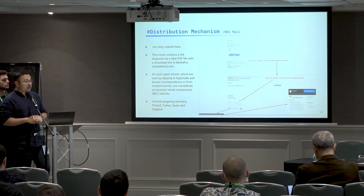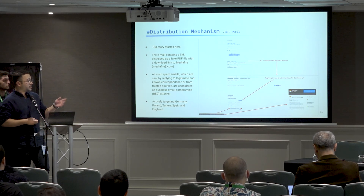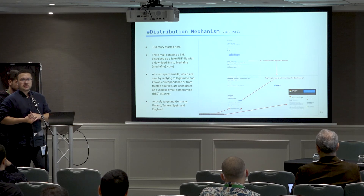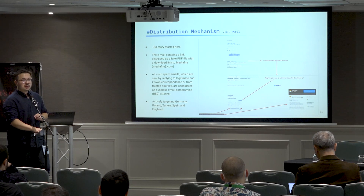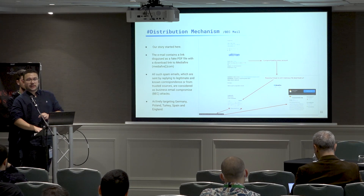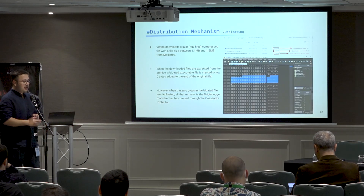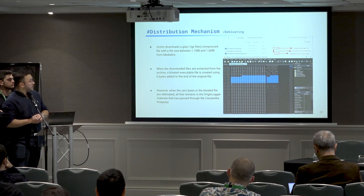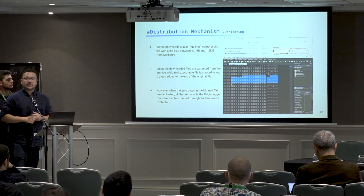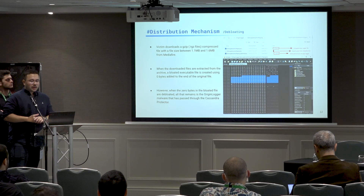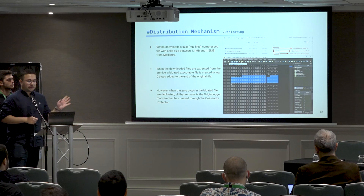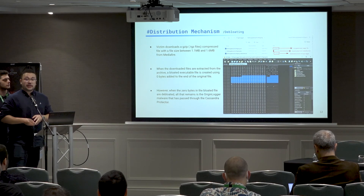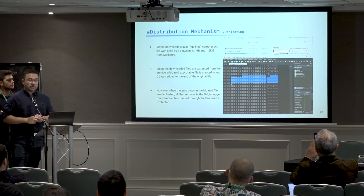When looking at the campaigns, malicious file names change depending on the target country. In this case they are using Turkish names to target Turkish victims, and we saw they are targeting Germany, Poland, England, and Turkey mostly, because with business email compromise they download the whole email user list from a compromised account and send spam automatically. Due to the as-a-service structure of OriginLogger, the attack types and methods are dependent on the affiliates' methodologies. However, these campaigns have been identified as being carried out directly by the OriginLogger developers with moderate confidence.